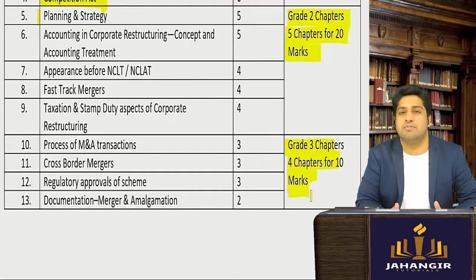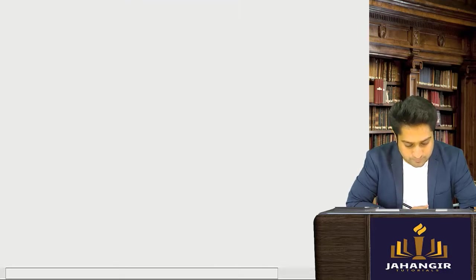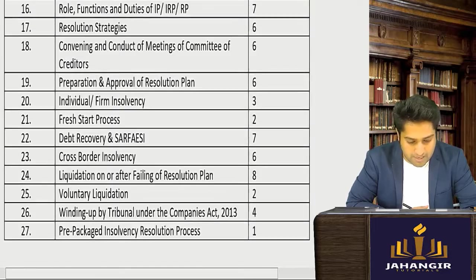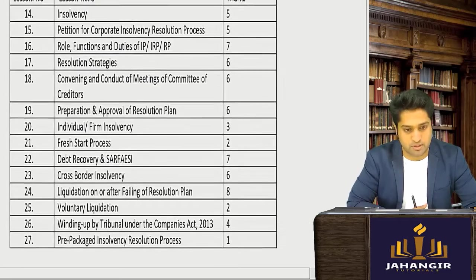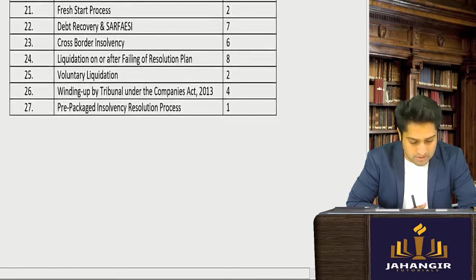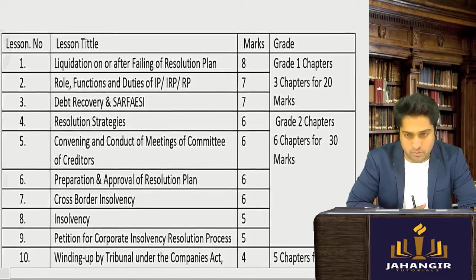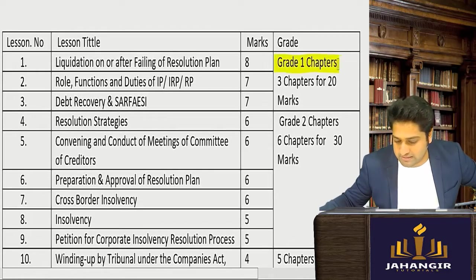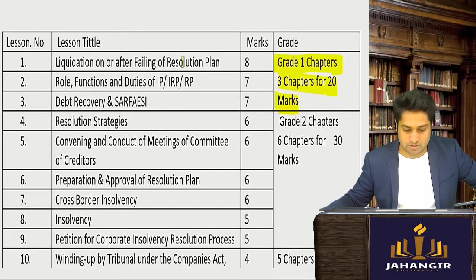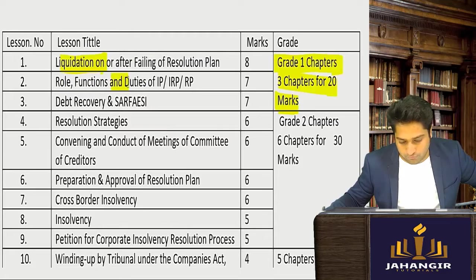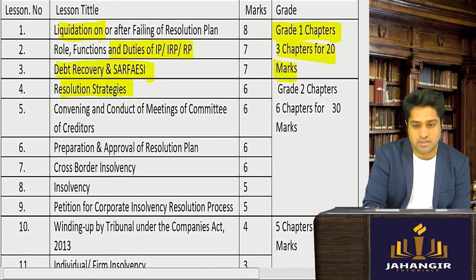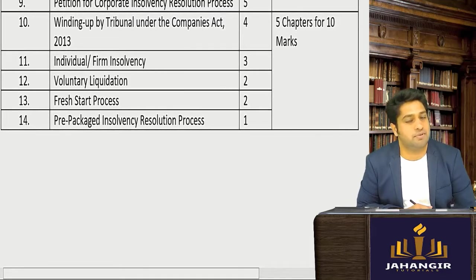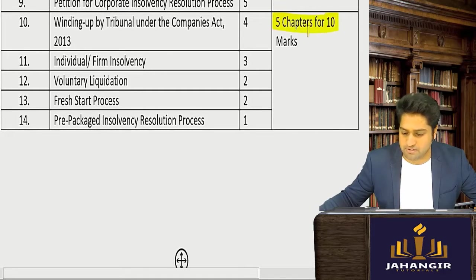Now for Part B — insolvency — I have put up the chapter-wise weightage; you can note it in your modules. Grade one chapters are three chapters for 20 marks in your exams, covering liquidation, role of IP, DRT, SARFAESI, and related chapters. Then come grade two chapters, and grade three has 5 chapters coming for an average of 10 marks in your exams.